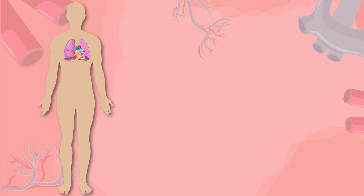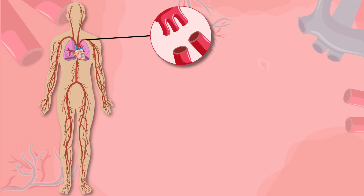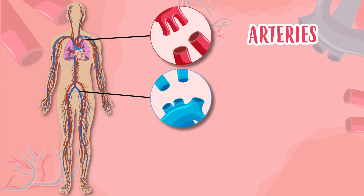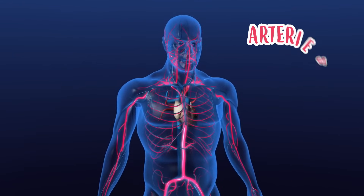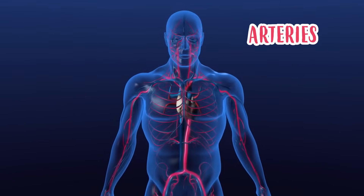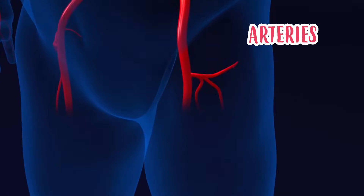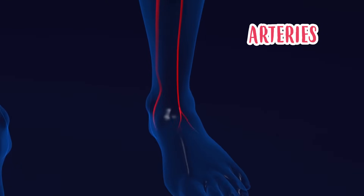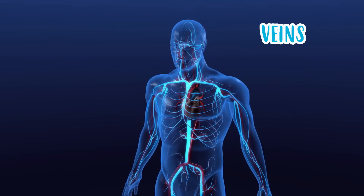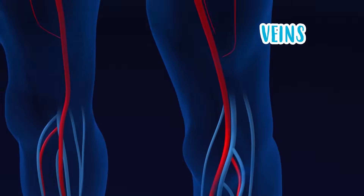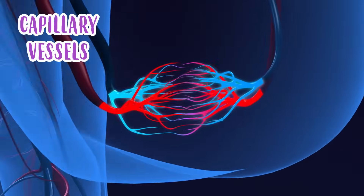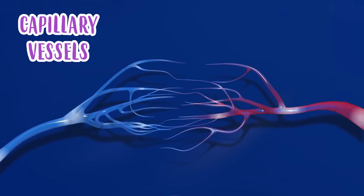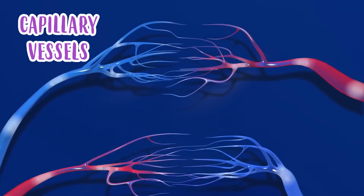And there are three types: arteries, veins, and capillary vessels. Arteries deliver oxygen and nutrients-rich blood to all our organs in our body. Veins take that blood, low in oxygen, back to the heart. And the capillary vessels, which are very small, connect arteries with veins and cells.